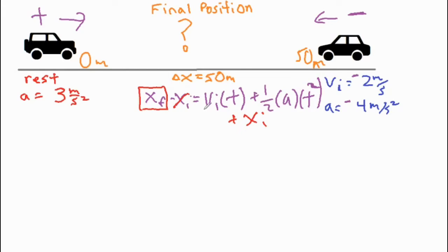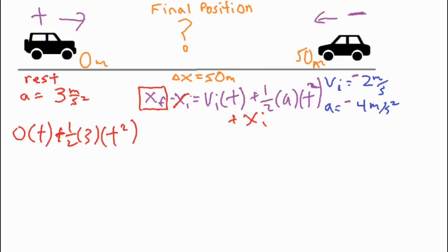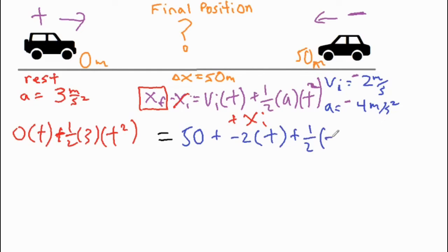For the first car, its initial velocity is zero — it starts at rest — so the equation becomes zero times t plus one-half times three times t squared. That equals the expression for the other car. For that car, the initial position is 50, so we have 50 plus vi times t where vi is negative 2, plus one-half times negative 4 times t squared. We can condense the numbers, multiply them out, rearrange, and then solve for time to plug into one of our equations to find the final position.